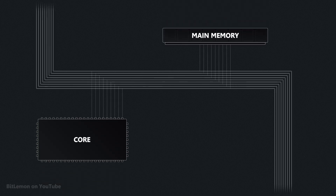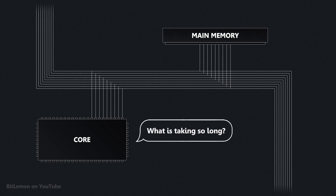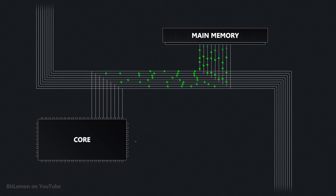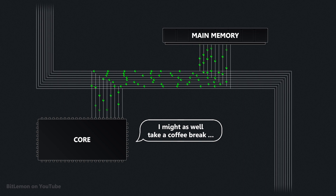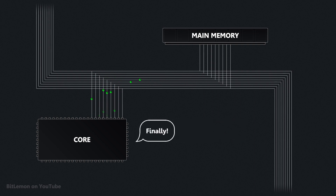Did you know that accessing main memory can take hundreds of CPU cycles? The processor operates at a very high speed, but every time it needs to fetch data from main memory, it's forced to wait until the requested data is retrieved. This huge delay is why computers have caches — to keep the data the CPU needs closer and minimize those costly interruptions.